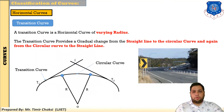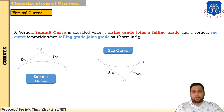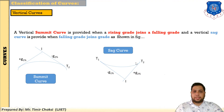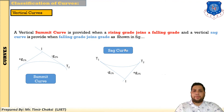Now I will explain vertical curves. There are two types of vertical curve. A vertical summit curve is provided when a rising grade is joined to a falling grade. A vertical sag curve is provided when a falling grade intersects with a rising grade. These two types of vertical curves are used in bridge construction, where the bridge grade goes from falling to rising or rising to falling.